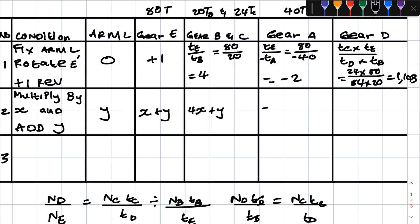For condition two, using the tabular method with x as the arm rotation and y added for each row: gear E gives x + y, gear B and C give 4x + y, gear A gives minus 2x + y, and gear D gives 1.143x + y. That completes condition two.